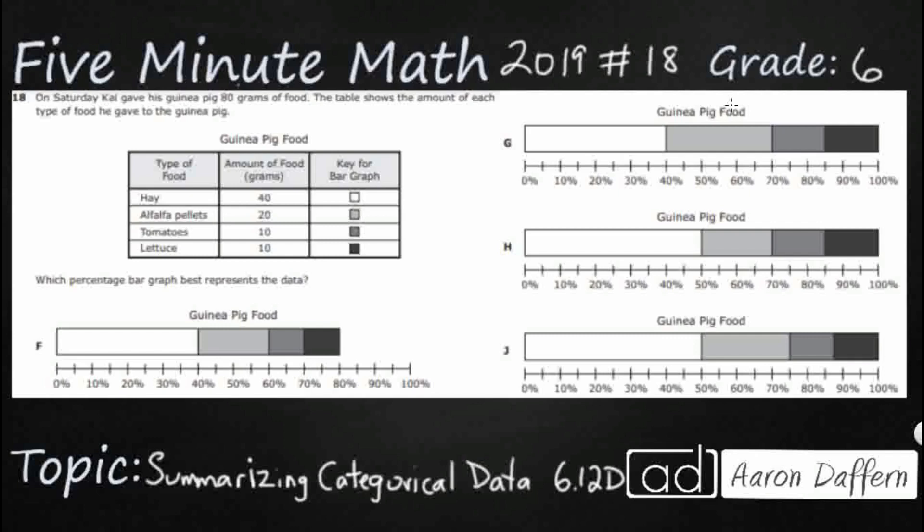So Kai is giving his guinea pig 80 grams of food and the table shows the amount of each type of food. You see that we have percentage bar graphs, F, G, H, and J, and each color is slightly darker than the one before.